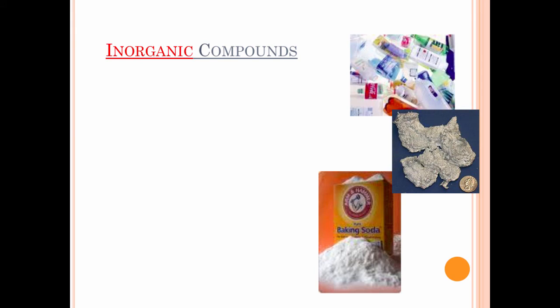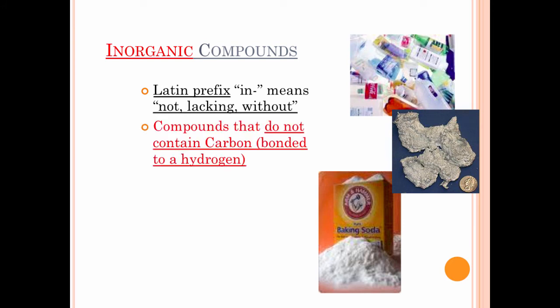So let's talk about inorganic compounds. If you have organic, then you have to have inorganic. In Latin, the prefix in means not lacking or without. So what do you think an inorganic compound is going to look like? Compounds that do not contain carbon and hydrogen. It is that simple. So when you're looking at a chemical formula, if you do not see a carbon and a hydrogen together, it is inorganic. If you do see one, it's organic. Is carbon dioxide organic or inorganic? So I want you to write that down. Tell me if you think it's organic or inorganic, and then I need you to tell me why. Notice the chemical formula is CO2.